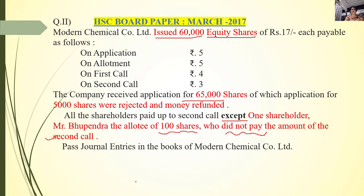So we need to make the journal entry accordingly for the last call. Now, is this a share forfeited problem? No. This is a calls-in-arrears scenario. In the last board exam paper I told you about forfeiture. Here, Mr. Bhupendra has not paid the amount, but his shares have not been forfeited. If the forfeited word appears, the entry would be like the last one. Here the entry is different — it will be calls in arrears.